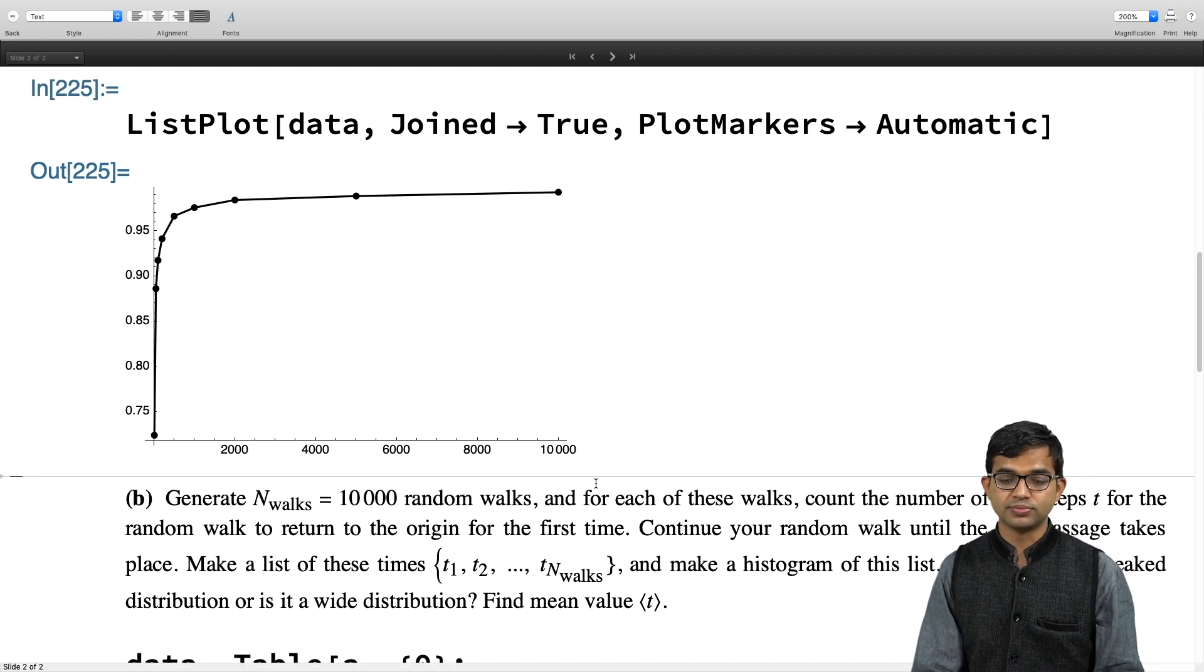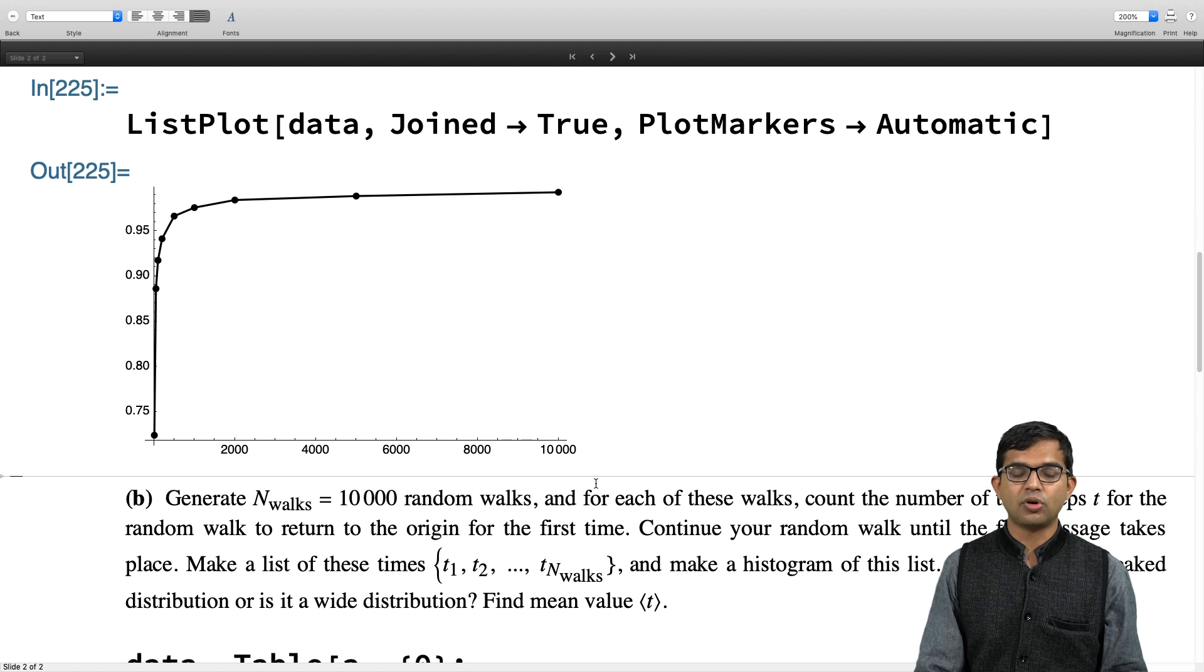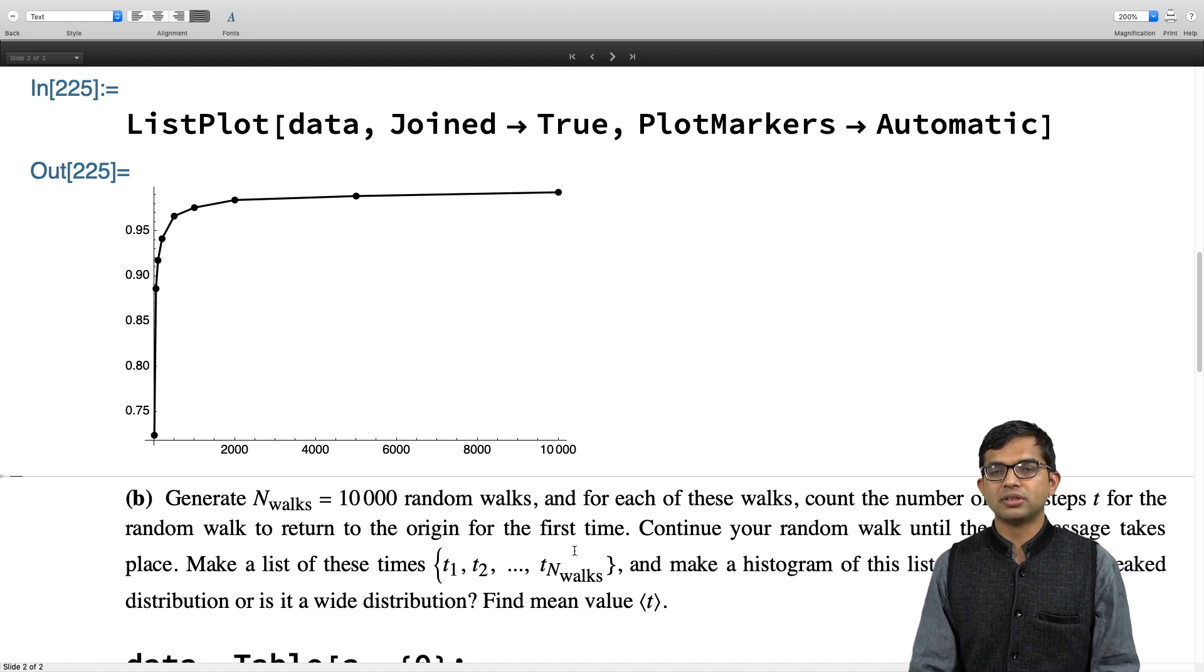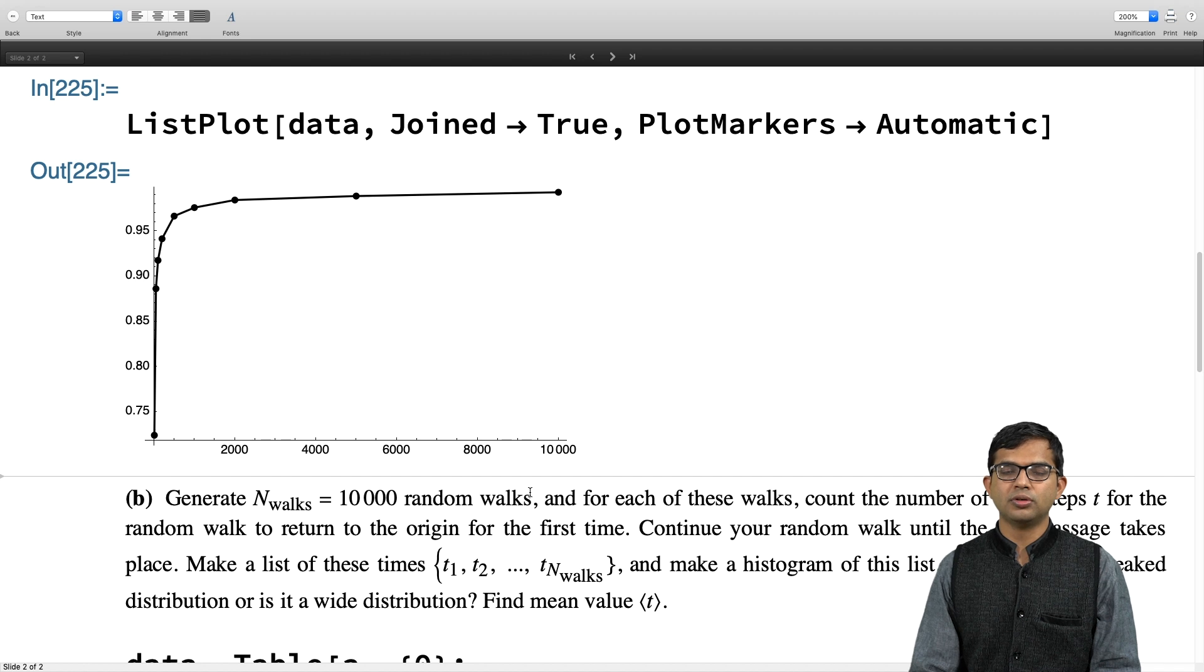That is part B. You want to generate 10,000 random walks and for each of these random walks, you just count the number of time steps t for the random walk to return to the origin for the first time. Continue your random walk until first passage takes place and just simply make a list of all these numbers. See what are these numbers like, are these numbers which seem to have a nice average, what is the distribution of this. I urge you strongly to pause the video, write your own piece of code, check this out and then only look at my solution.